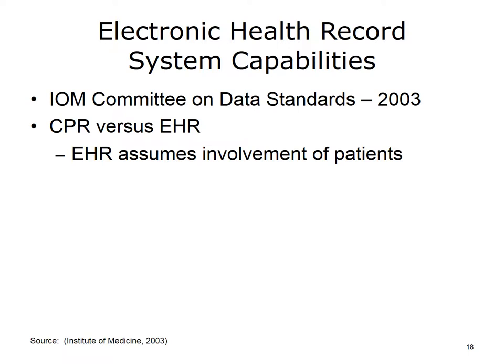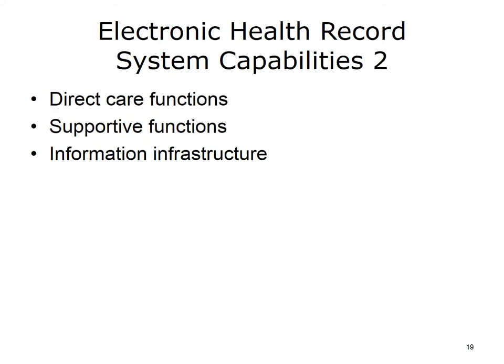In 2003, the IOM's Committee on Data Standards for Patient Safety issued a letter report in which some of the key functional features proposed for an electronic health record, or EHR, were identified. One of the differences between the criteria for the CPR and EHR is that the EHR assumes there will be involvement and communication with and from patients as well as healthcare providers. The functions of an optimal EHR are divided into three areas: functions relating to direct care of the patient, those relating to supporting care, and the functions relating to the information infrastructure that underlies the EHR.